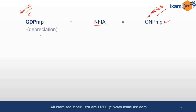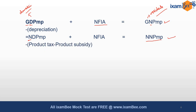When depreciation is subtracted from GNP at market price, we arrive at net domestic product at market price — so gross becomes net after subtracting depreciation. When NFIA is added to NDP at market price, we arrive at net national product at market price. When product tax is subtracted and product subsidy is added, we arrive at net domestic product at basic price. Product tax could be excise tax, sales tax, or import and export duties. Product subsidies could be subsidies on food, petroleum, fertilizer, etc. Accounting for these net indirect taxes on products gives us the net domestic product at basic price.